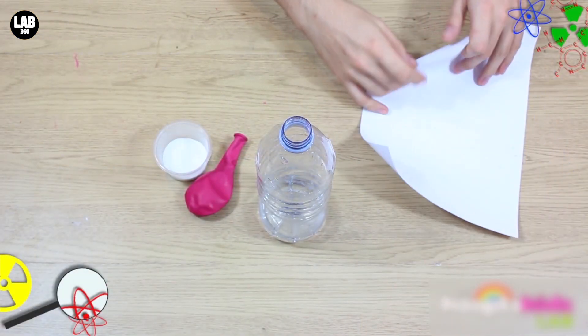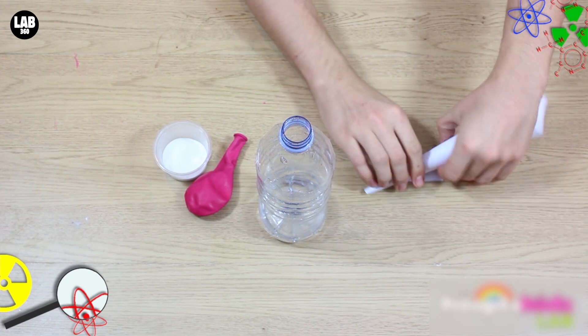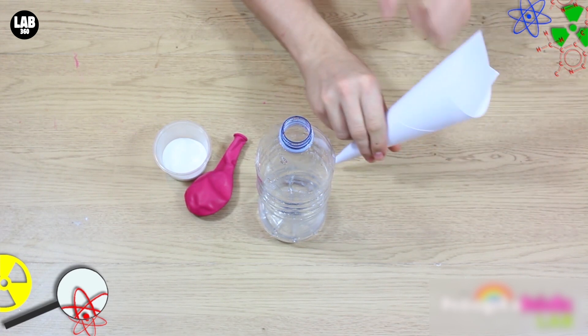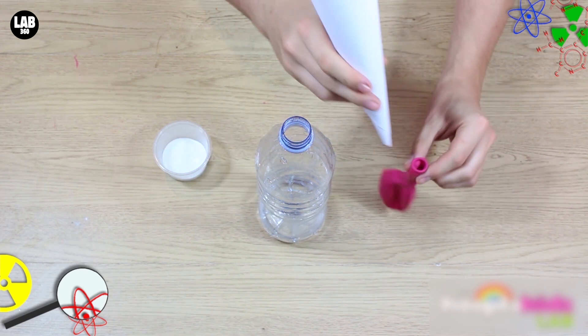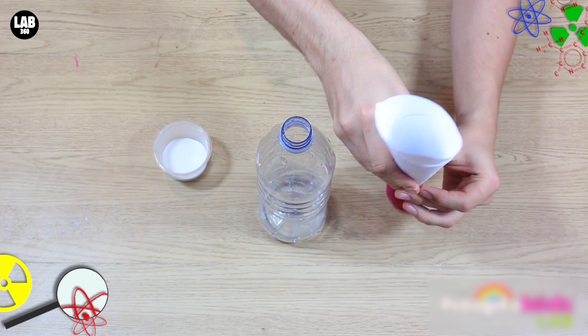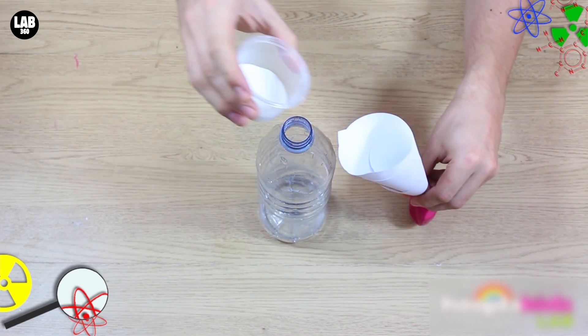First of all, you need to take your paper and roll it up into a cone shape. Here we go. Easy peasy. So, just put it into the top of your balloon, like so, and pour in the baking soda.